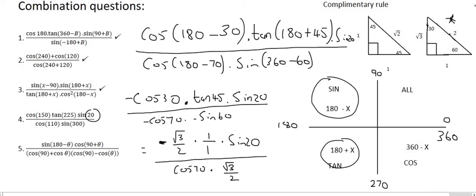We're left with minus one times sin 20 over cos 70. Then we should remember the complementary rule, which says sin and cos are the same as long as their angles add to 90. Sin 20 and cos 70 do add to 90, so these two are actually the same and cancel. The final answer is minus 1.